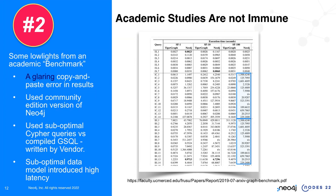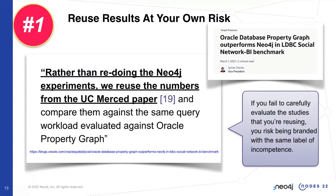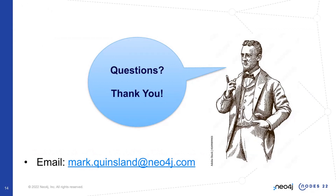Tip number one: the only thing worse than doing a paper like this is relying on it. Rather than redoing these experiments themselves, Oracle decided to simply reuse the UC Merced paper with all its errors. If you're trying to save time and money, this is clearly not the way — because you're risking being branded with the same level of incompetence. It's ironic given Oracle's own restrictions on benchmarking. Basically, they put their own name on somebody else's incompetent paper.